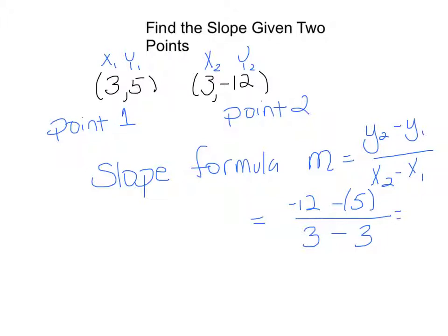Negative 12 minus 5 is negative 17, 3 minus 3 is 0. And that's my slope.